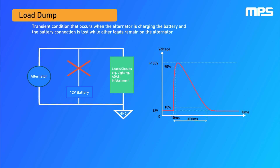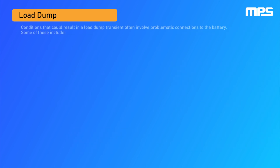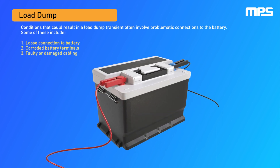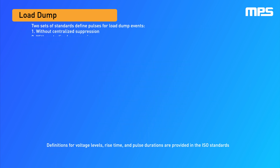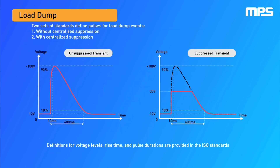A load dump is the voltage surge generated when the battery is disconnected while the alternator is still connected to other electronic loads, such as if the battery terminal or cable has decayed. This surge can exceed 100 volts and cause significant damage to circuits. There are two types of load dump transients: unsuppressed and suppressed.